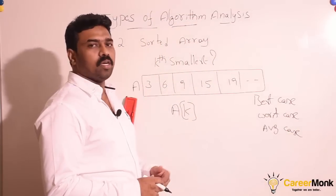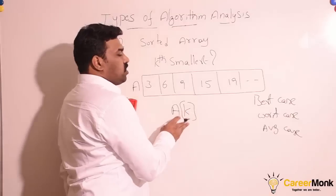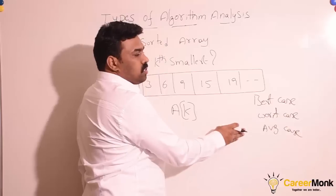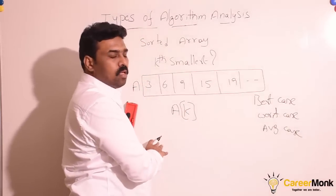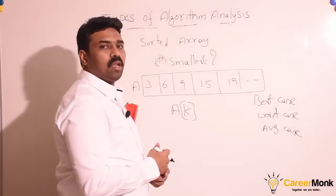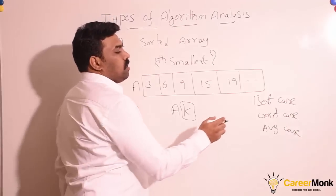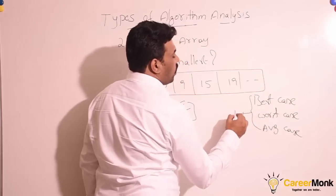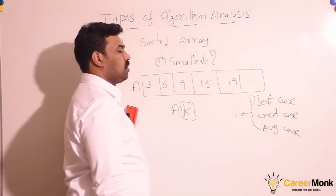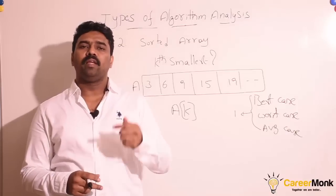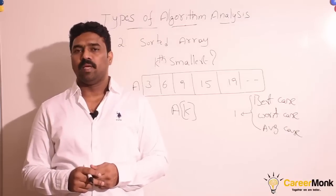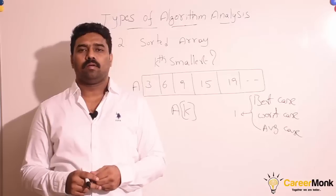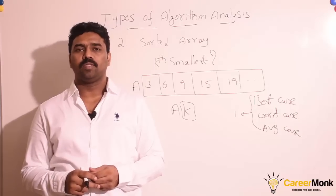Since the array elements are in sorted order, whether k is equal to 1 or n, the access time is the same. So for all inputs, the access time is the same. Since there is no change in the running time of the algorithm with input, we can say in all cases the access time is 1, some constant. So algorithm analysis is nothing but finding the running times of the algorithm in the best case, worst case, and average case — it might be different or same depending upon the problem and solution.